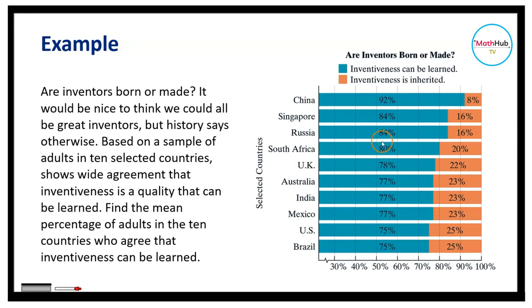Let's consider the following example and apply the principle we just learned. Are inventors born or made? Based on a sample of adults in 10 selected countries, there is wide agreement that inventiveness is a quality that can be learned. Find the percentage of adults in the 10 countries who agree that inventiveness can be learned.